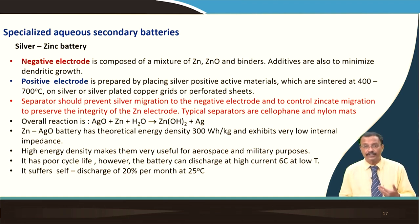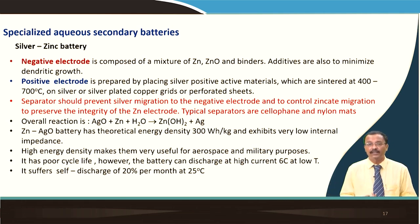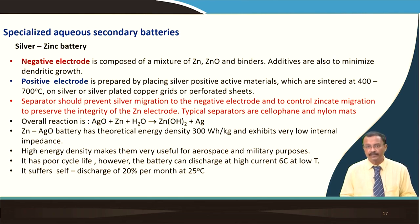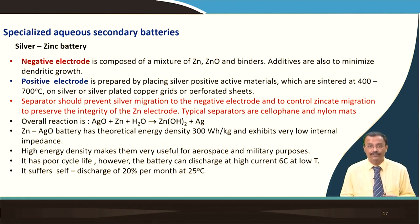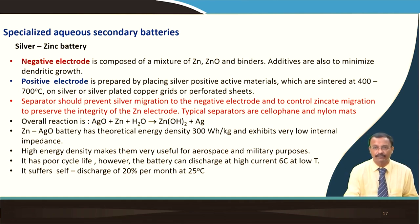High energy density makes silver zinc batteries very useful for aerospace and military applications, but they have poor cycle life. However, the battery can discharge at high current — about 6C, meaning approximately 10 minutes — but it suffers from self-discharge, so shelf life is not very attractive.